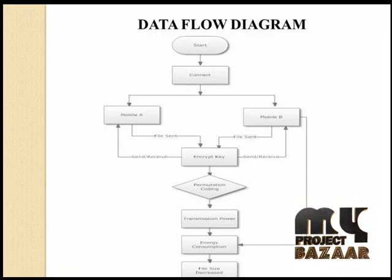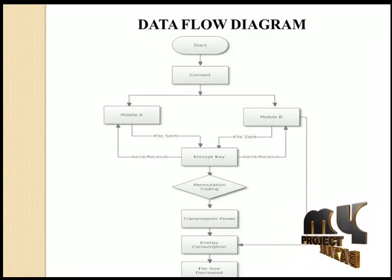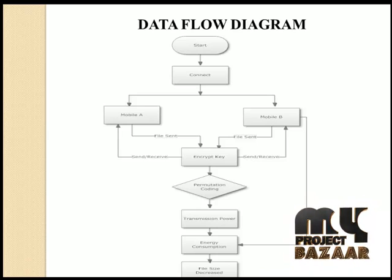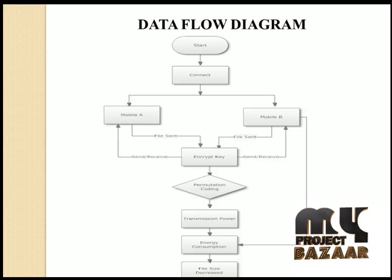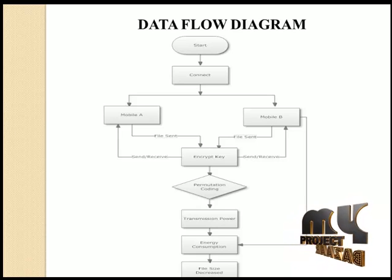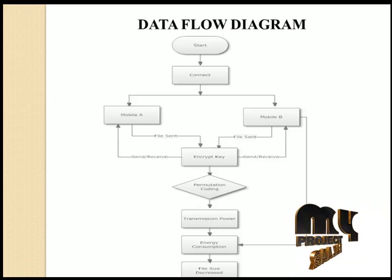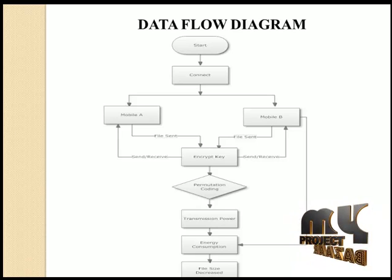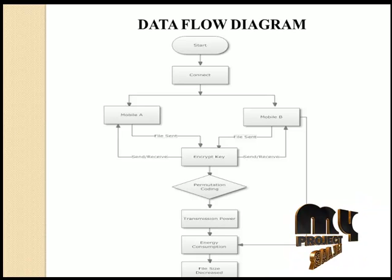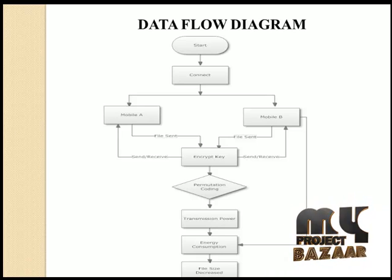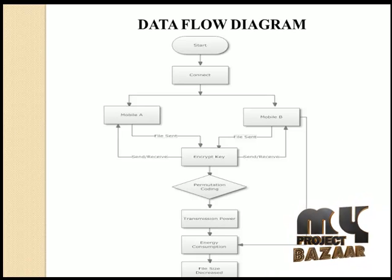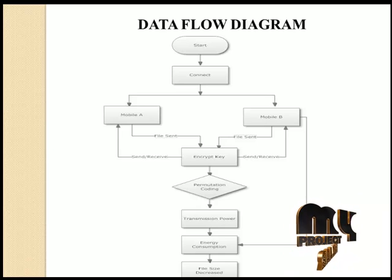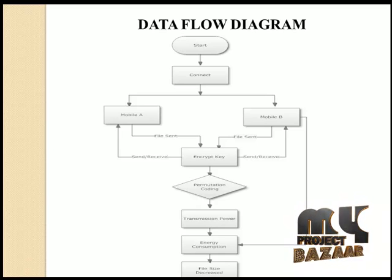This is our data flow diagram. First, we connect both mobile stations — mobile A and mobile B. After the connection is established, we can either send or receive a file between mobile A and mobile B. Encryption and decryption can be performed on both mobile stations, and at the time of encryption and decryption, permutation coding is performed to calculate the transmission power.